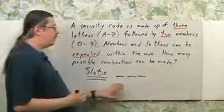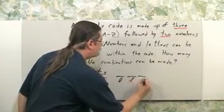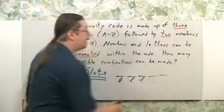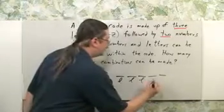For the three letters, I'm going to label letter, letter, letter, followed by two numbers, number, number.